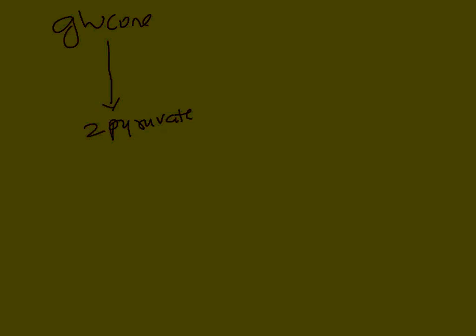Before I start explaining pyruvate kinase deficiency, let me review something about energetics coming from glycolysis — that is breakdown of glucose to pyruvate. One glucose molecule is converted to 2 pyruvates, and 2 pyruvates will be converted to 2 lactate. This is anaerobic glycolysis, especially going on in red blood cells. RBCs conduct anaerobic glycolysis.